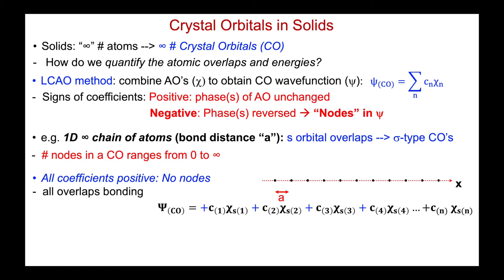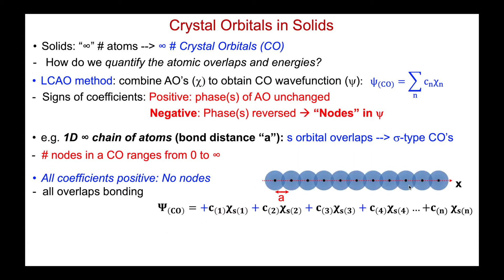Let's make all of the coefficients positive. So now my crystal orbital wave function — I'm adding the coefficient C multiplied by the atomic orbital for atom number 1, for number 2, number 3, etc. In every single case, the important thing here is the signs: I'm adding them all, all coefficients are positive, there are no nodes, and for s orbitals, all of the overlaps are bonding. We're constructively interfering between every single atom.